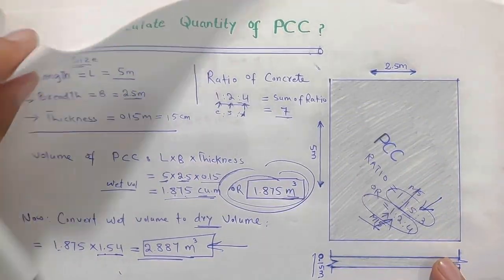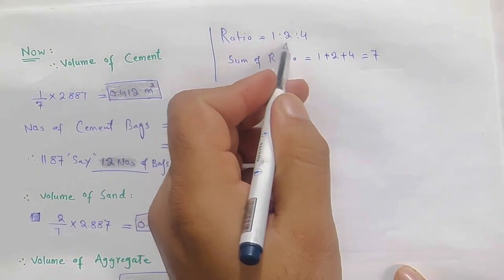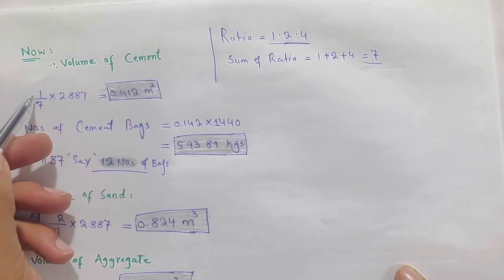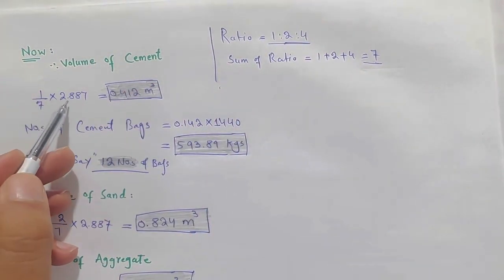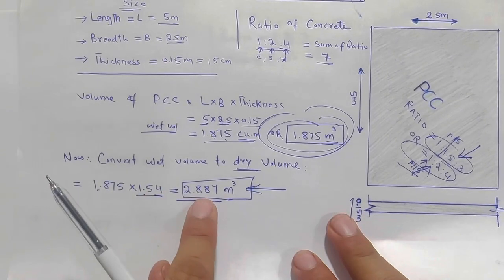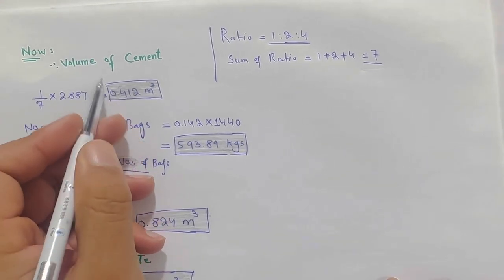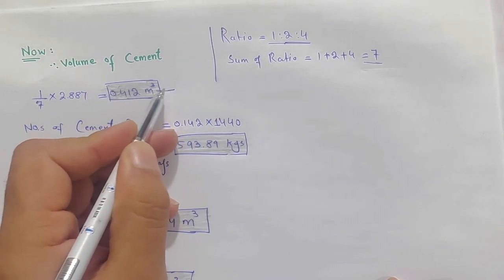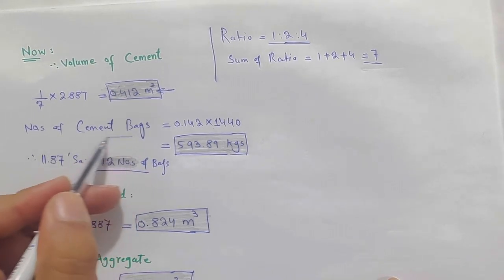Now we find the volume of cement. The ratio is 1:2:4 and the sum of ratio is 7, so 1 part is cement. Therefore, 1 divided by 7, multiplied by the dry volume of 2.887, gives us 0.412 cubic meter. This is the volume of cement in meter cube.